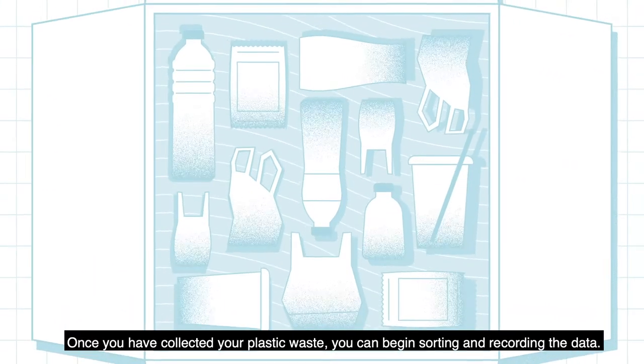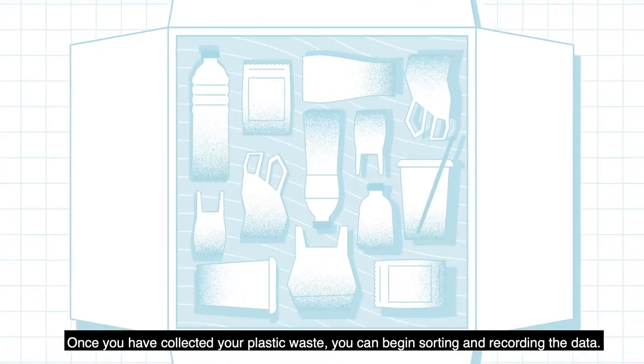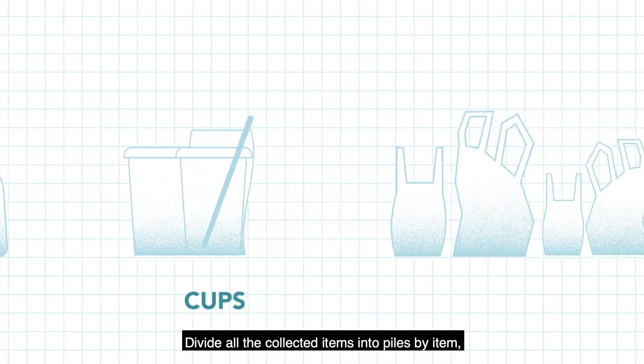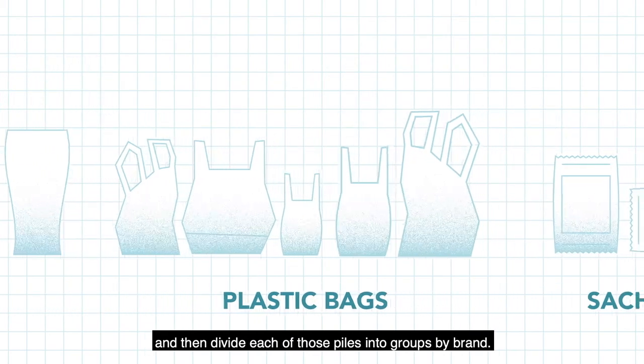Once you have collected your plastic waste, you can begin sorting and recording the data. Divide all the collected items into piles by item, and then divide each of those piles into groups by brand.